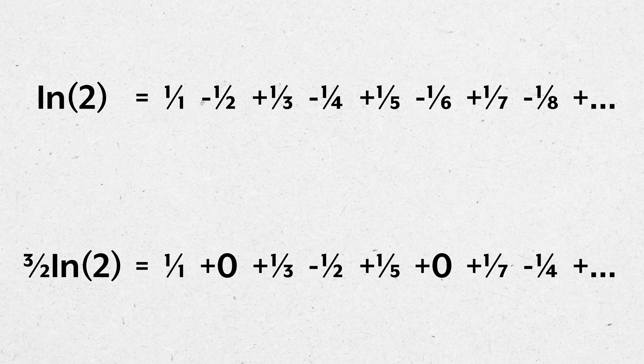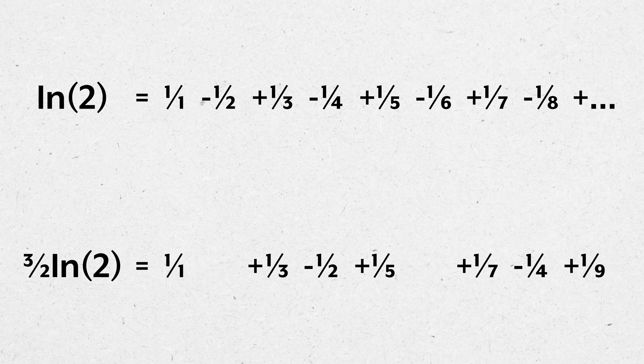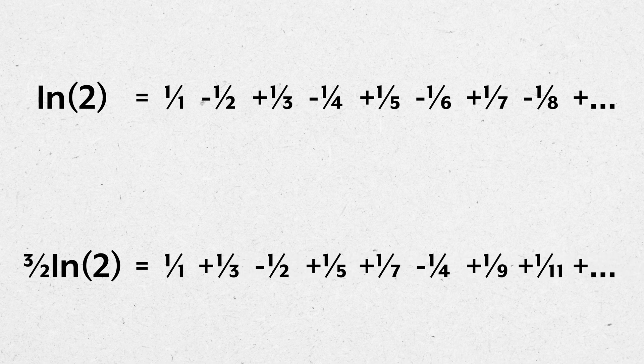Let's clean this series up by removing the zeros. There is a pattern to this infinite series: we're adding the reciprocal of the first two odd natural numbers, then subtracting the reciprocal of the first even natural number.